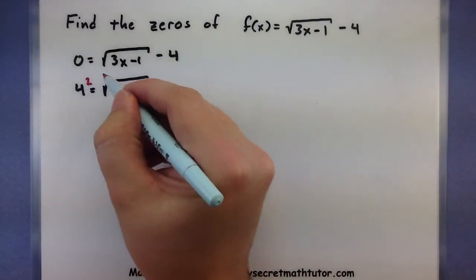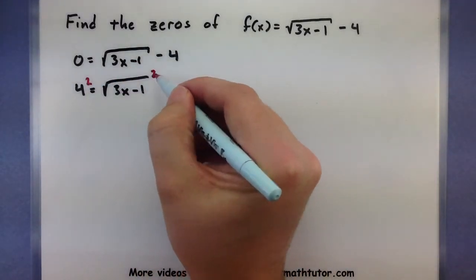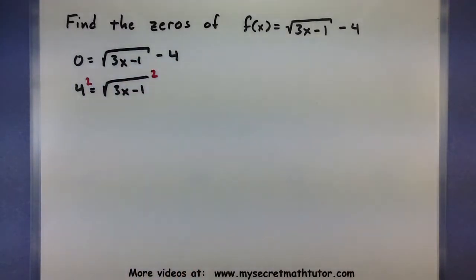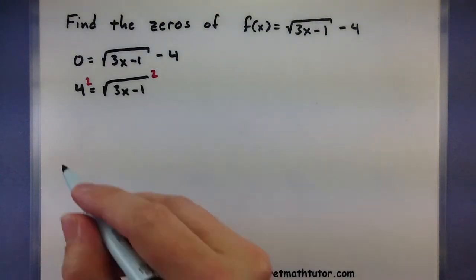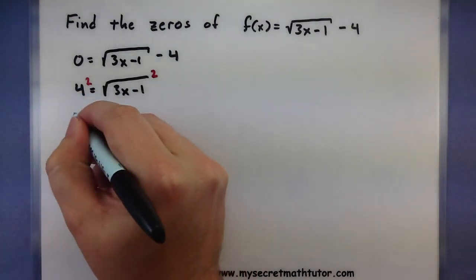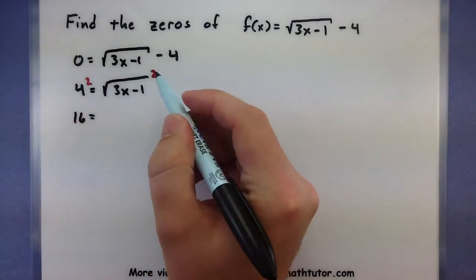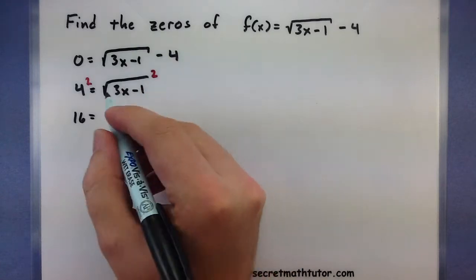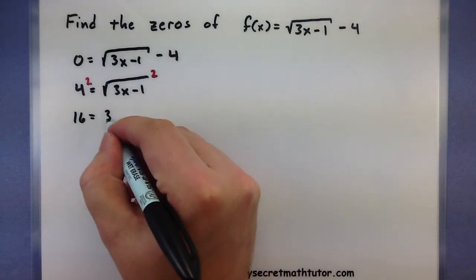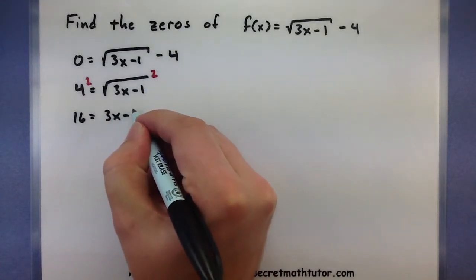My root is isolated, so let's square both sides and get rid of it. So 4 squared will give me a 16, equals — squaring the square root — I have 3x minus 1.